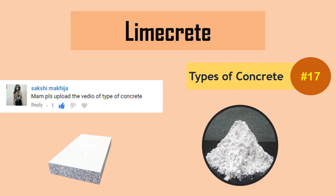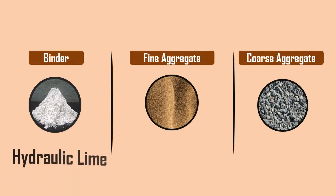Limecrete. Limecrete is a type of concrete which uses a natural hydraulic lime instead of cement for the manufacture of concrete.